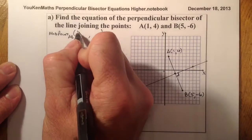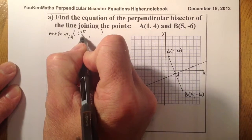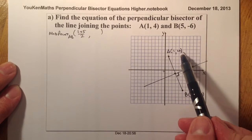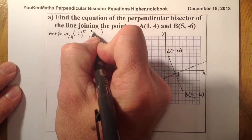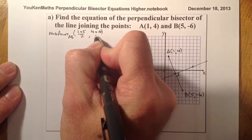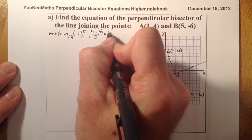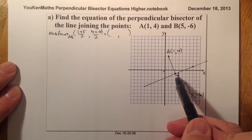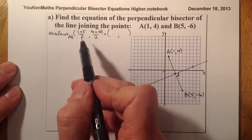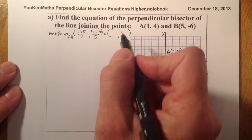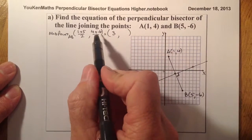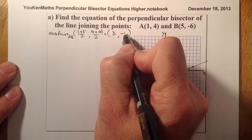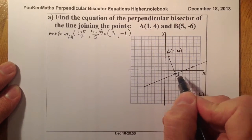The first thing we're going to do is find the midpoint of line AB. I'm going to take the mean of the x-coordinates — that's 1 and 5, so 1 plus 5 divided by 2. And the mean of the y-coordinates — that's 4 and minus 6, so 4 plus minus 6 divided by 2.